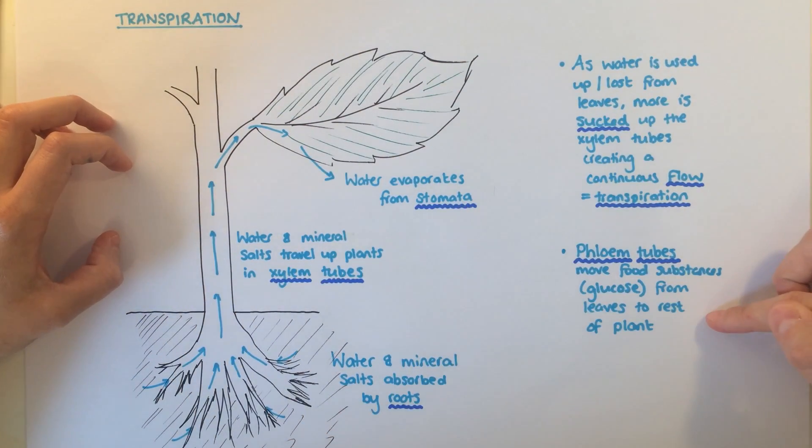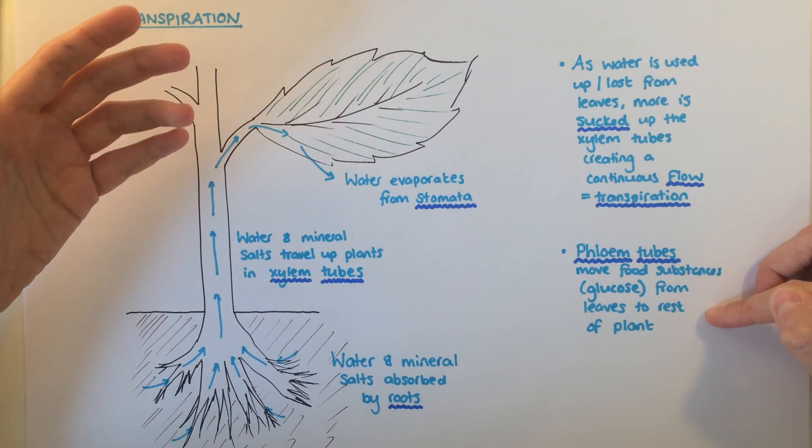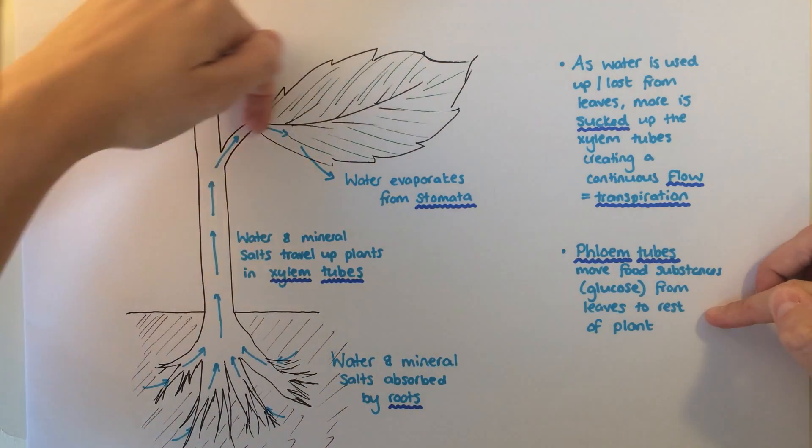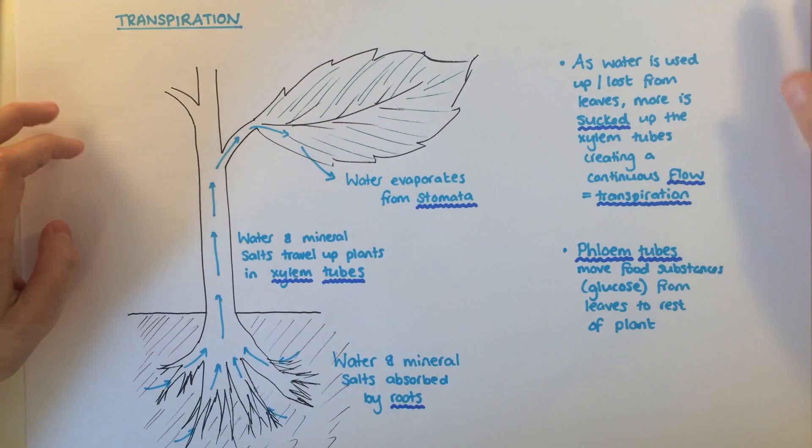It causes more water to be sucked up the xylem. In addition to xylem tubes, there are also phloem tubes. These transport substances, such as glucose, in the opposite direction, from the leaves down and around to the rest of the plant.